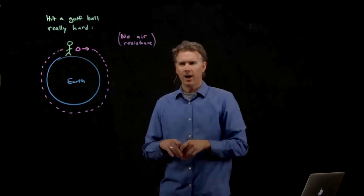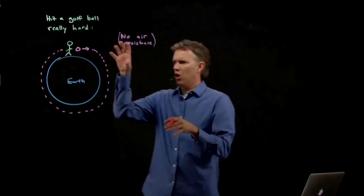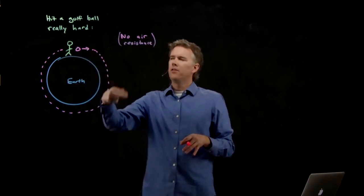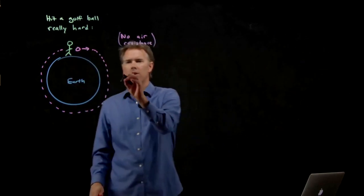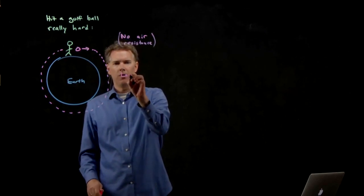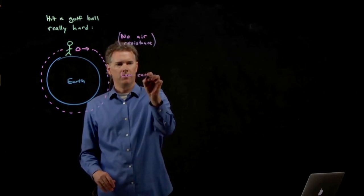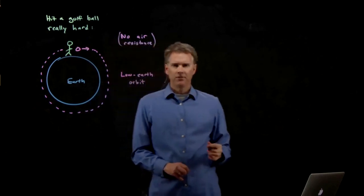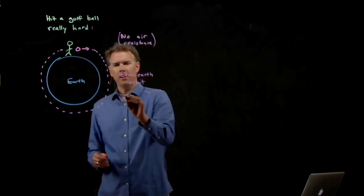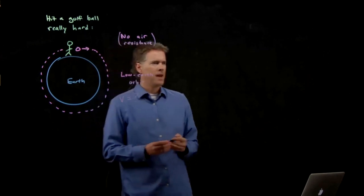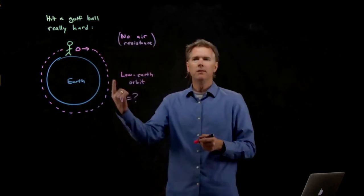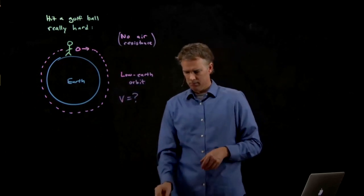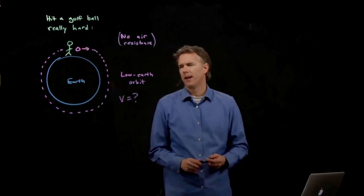Okay, so you're standing on an airless earth. You hit this golf ball really hard, such that it orbits. This is called a low earth orbit. And let's ask the question, how hard would you have to hit it? How fast does that golf ball need to be moving in order to orbit the earth? All right. We can probably figure that out.